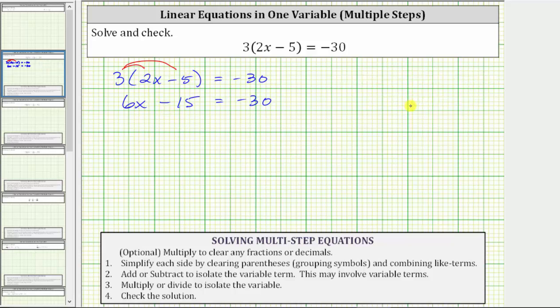Continuing, the next step is to add or subtract to isolate the variable term, which in this equation is six x. To isolate six x, we need to undo minus 15 by adding 15 to both sides of the equation. Simplifying, negative 15 plus 15 is zero. The equation simplifies to six x equals, on the right side, negative 30 plus 15 is negative 15.